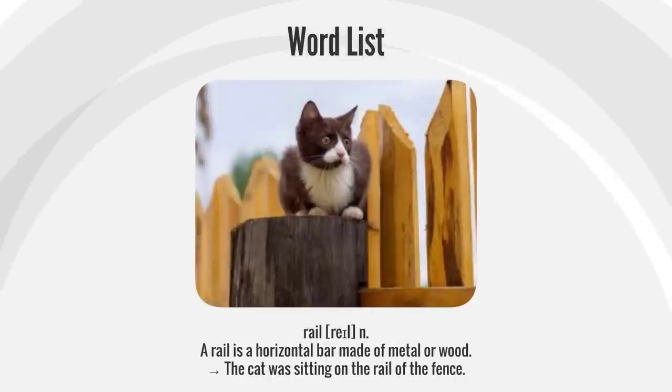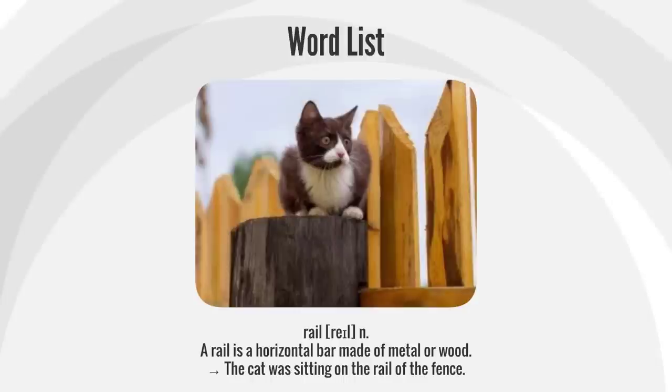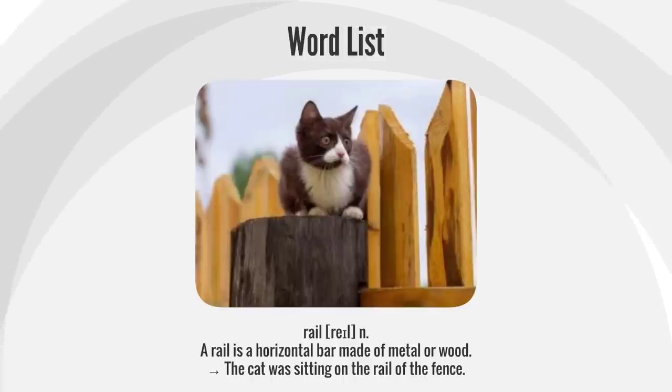Rail. A rail is a horizontal bar made of metal or wood. The cat was sitting on the rail of the fence.